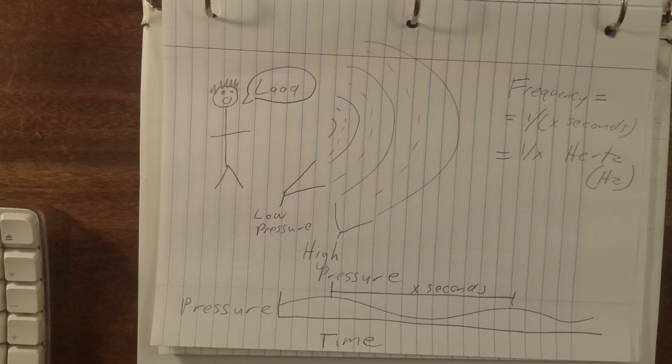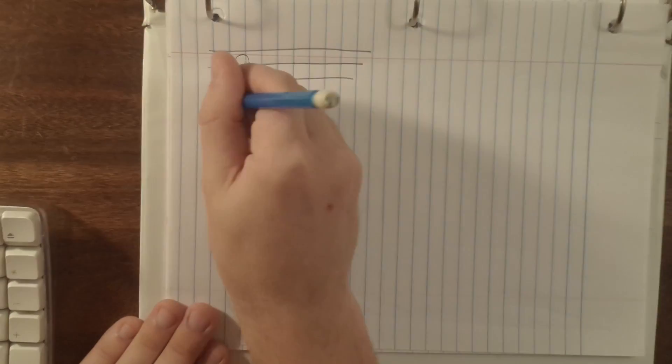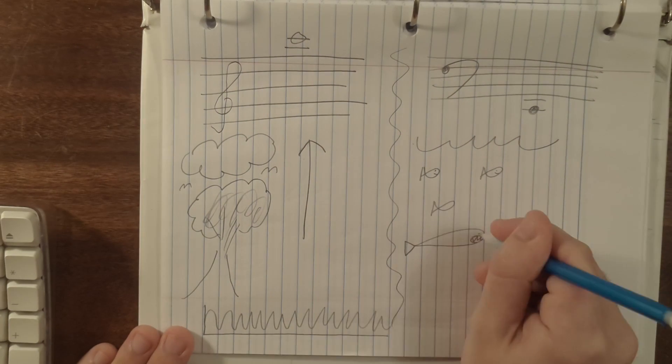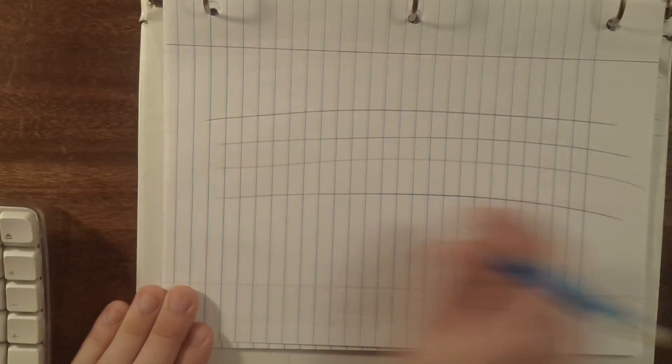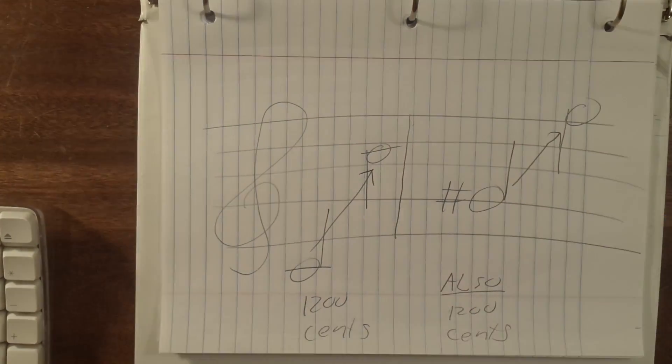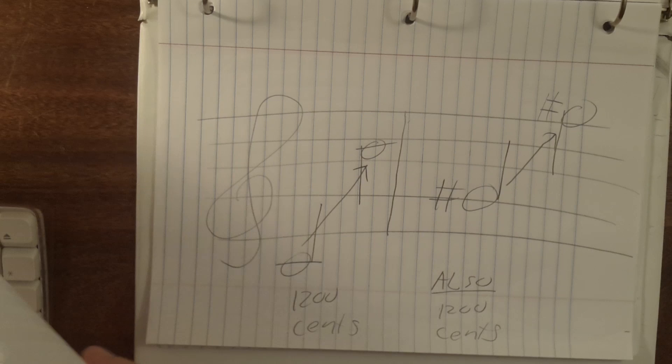This is where frequency, a measurable phenomenon, becomes pitch, a subjective experience. The pitch of a note refers to how high or low it sounds, and changes in pitch, aka intervals, are measured in a unit called cents, where there are twelve hundred cents per octave.